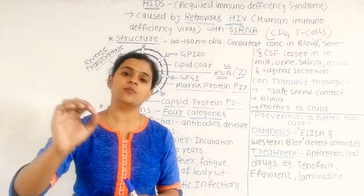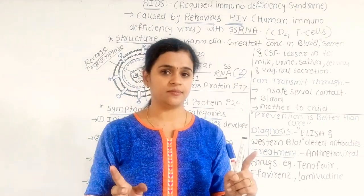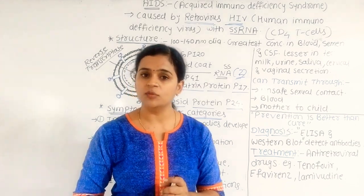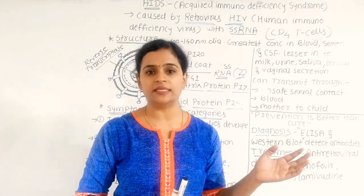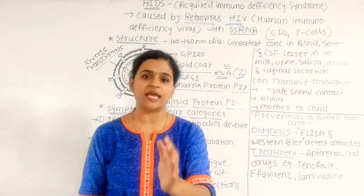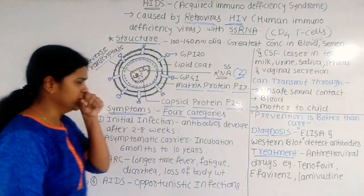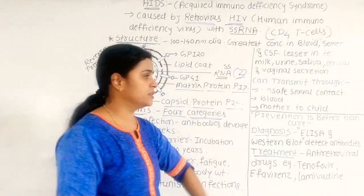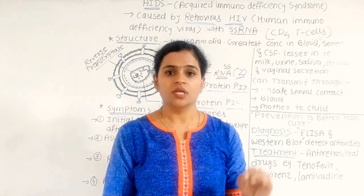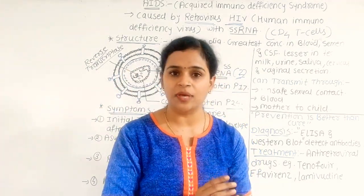As soon as the virus enters our body, HIV attacks our T-lymphocytes. In this lesson, we studied about lymphocytes — two types of WBCs: B lymphocytes make antibodies, T lymphocytes handle cell-mediated immunity. HIV will affect the CD4 T cells specifically. When HIV enters your body, it attacks the CD4 T cells — CD4 is a type of T lymphocyte.